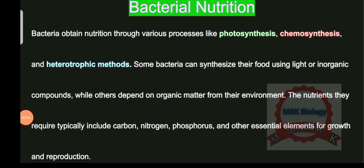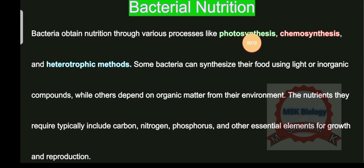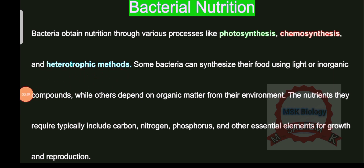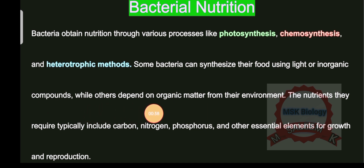Hello friends, Assalamu Alaikum. Today we will study bacterial nutrition. Bacteria obtain nutrition through various processes like photosynthesis, chemosynthesis, and heterotrophic methods. Bacteria can manufacture and obtain their nutrition by photosynthetic, chemosynthetic, or heterotrophic methods.